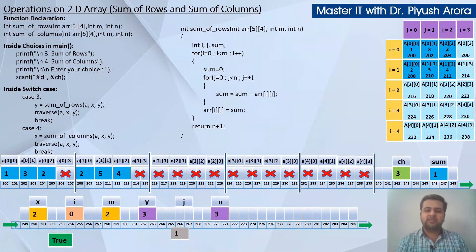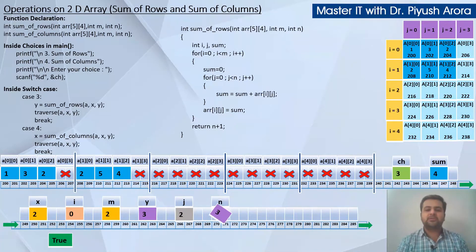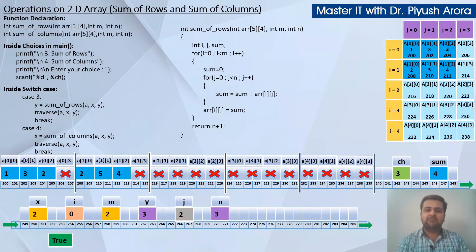j is incremented (j becomes 1), condition 1 < 3 is true, so we re-enter the loop. Now sum = sum + arr[0][1], which is arr[0][1] = 3, so 1 + 3 = 4. j is incremented again (j becomes 2), condition 2 < 3 is true. Again sum = sum + arr[0][2] = 4 + 2 = 6. j is incremented (j becomes 3), condition 3 < 3 is false, so the inner for loop terminates.